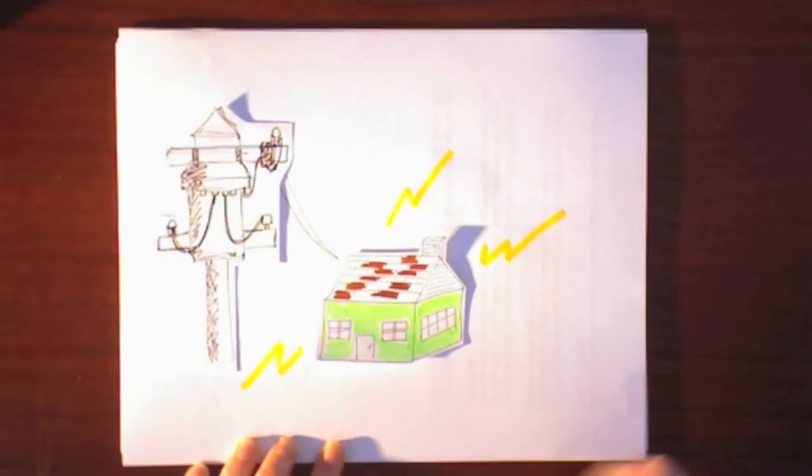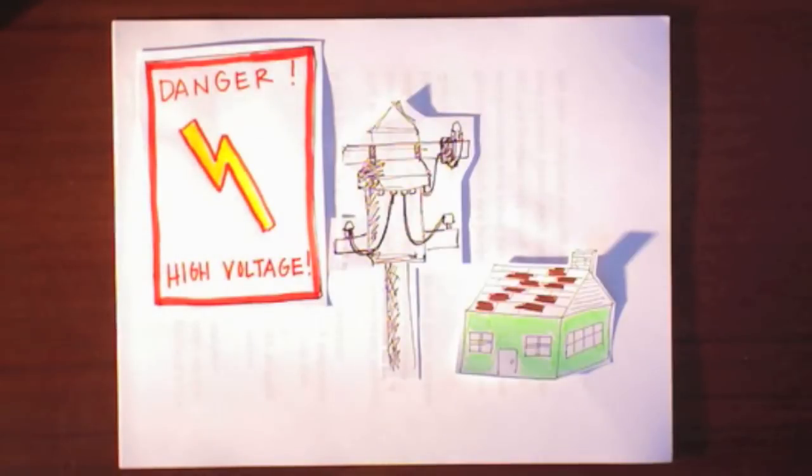What they do is lower, or step down, the voltage from transmission levels that would fry all of your local power lines, to distribution levels that would fry all of your appliances, and finally to household voltage, which lets you microwave your pot pie.